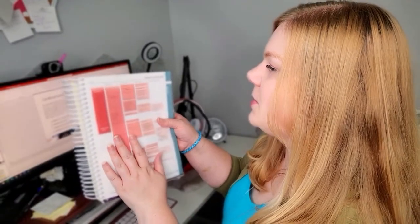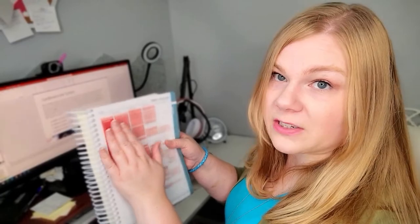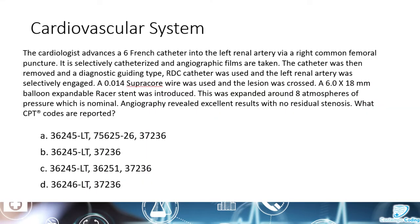According to Appendix L of our CPT book, the left renal artery is part of our first order vessels. To locate the selective catheterization, we would look in the CPT index for artery-abdomen catheterization, which gives us code range 36245 through 36248. Angiography of the left renal vessel was performed; however, there is no mention in the report of diagnostic results from the angiography, so it's not a diagnostic angiography — it was just angiography done for mapping to check for stenosis, so that's already included.